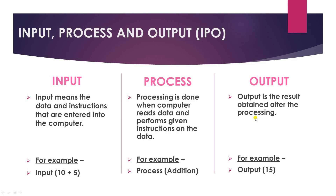Let's understand this with the help of an example. Input is 10 plus 5 — so there are two numbers, 10 and 5, and we have the plus symbol, meaning an addition operation is being performed. So the process is addition, and the final output is 15, because when we add 10 and 5, we get 15 as the result.